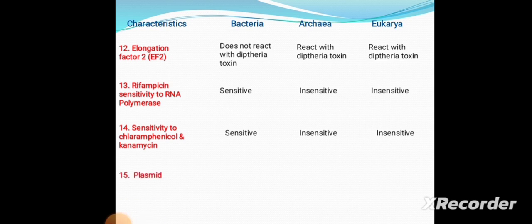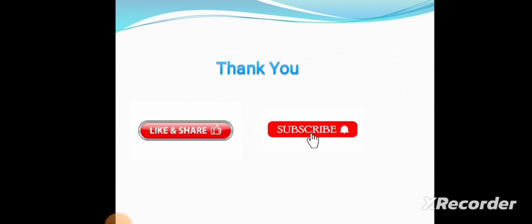Fifteenth is plasmid. Plasmid is present in Bacteria and Archaea but absent in Eukarya. That is all about the comparison between Bacteria, Archaea, and Eukarya. If you like this video, please like, share, and subscribe to this channel.